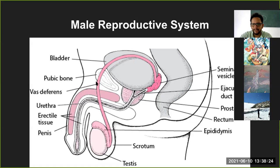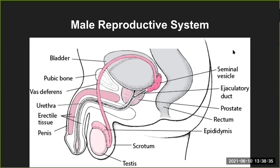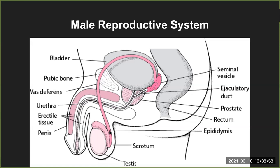The vas deferens is the tube that extends from the seminal vesicle structure and ultimately connects to the internal tube called the urethra in the penis. There are also erectile tissues present in the penis. The testis, epididymis, and the scrotum — that pouch-like structure — are shown. This is the general male reproductive system in terms of the lateral view.